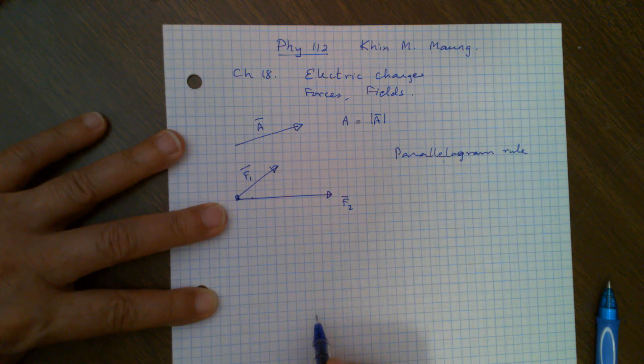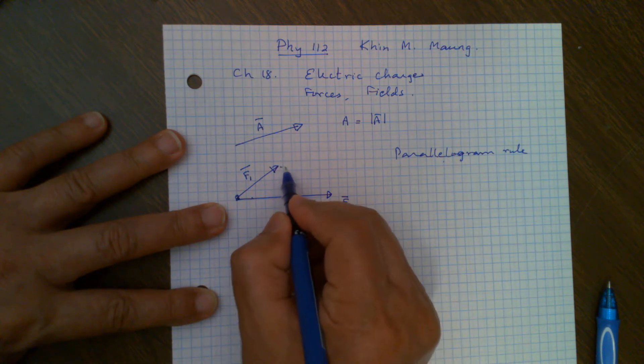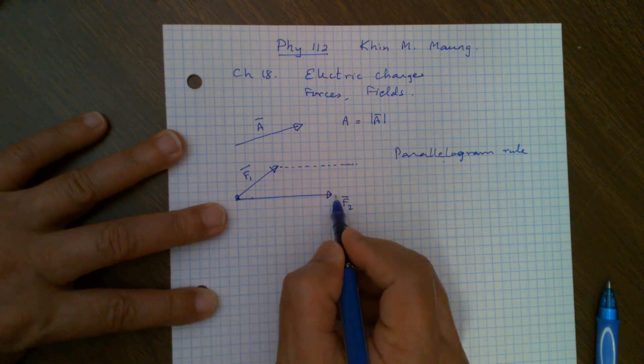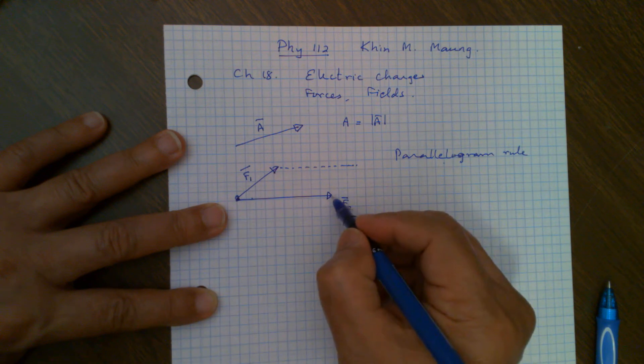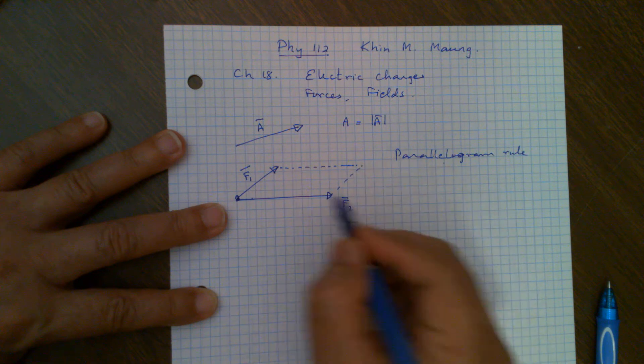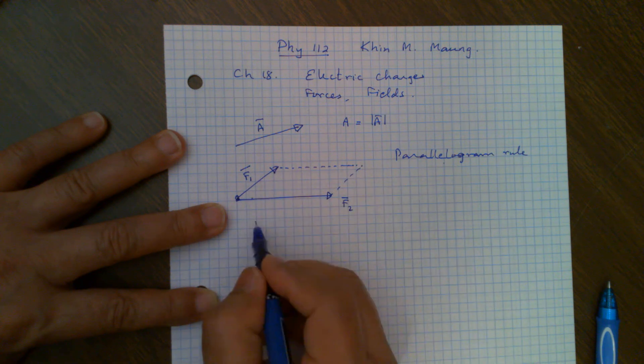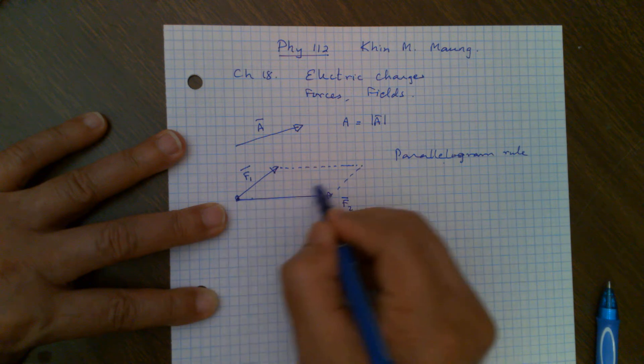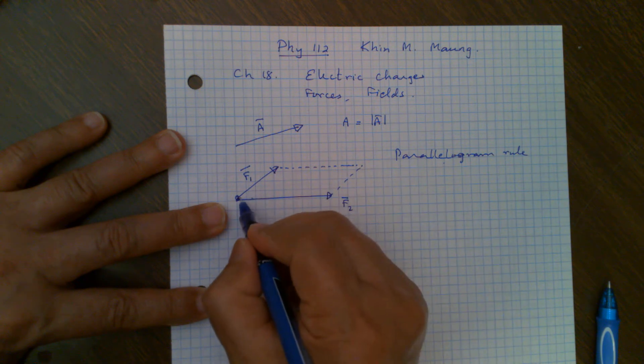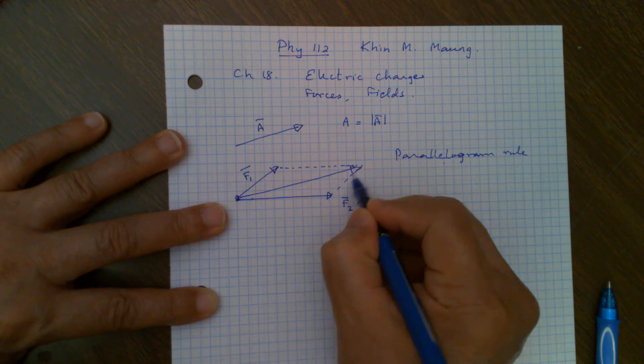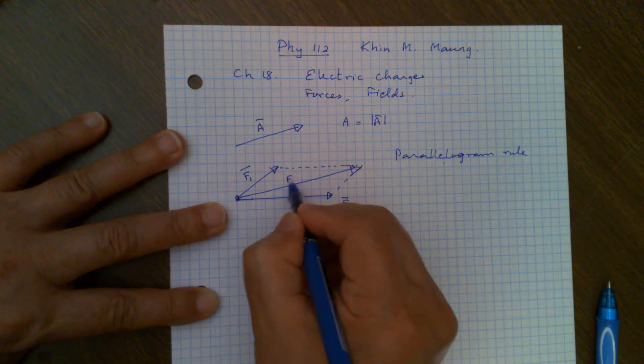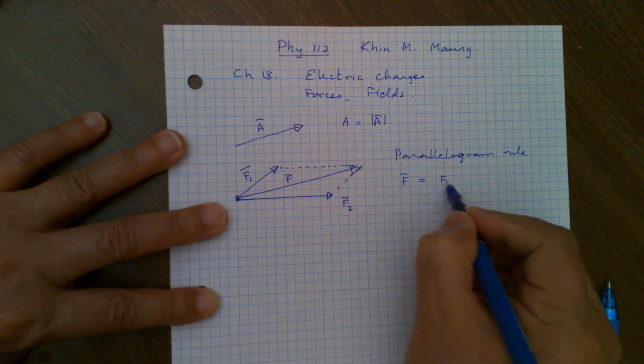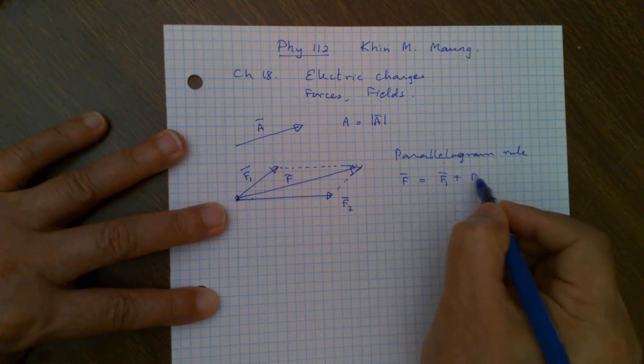What you do is you draw one parallel to this base one. And then you draw another one parallel to this one. Then you get a parallelogram. Then you connect from here to here. That is, you draw a line along this diagonal. And that will be your resultant force F. And we write that the resultant force F is vector F1 plus vector F2.